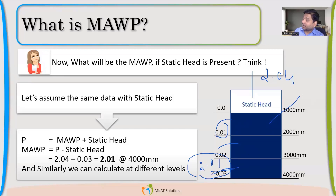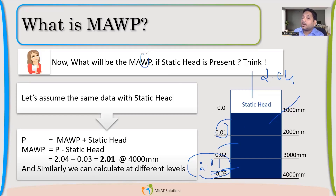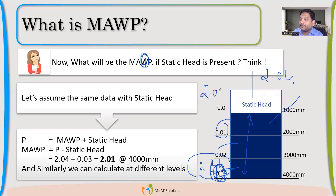MAWP is always linked with the working condition — maximum allowable working. In working condition, there has to be static head. Once that static head is there, we know this much static head is going to come, so this much pressure is already going to be there. What additionally I can apply is only 2.01 MPa — so that becomes our MAWP.